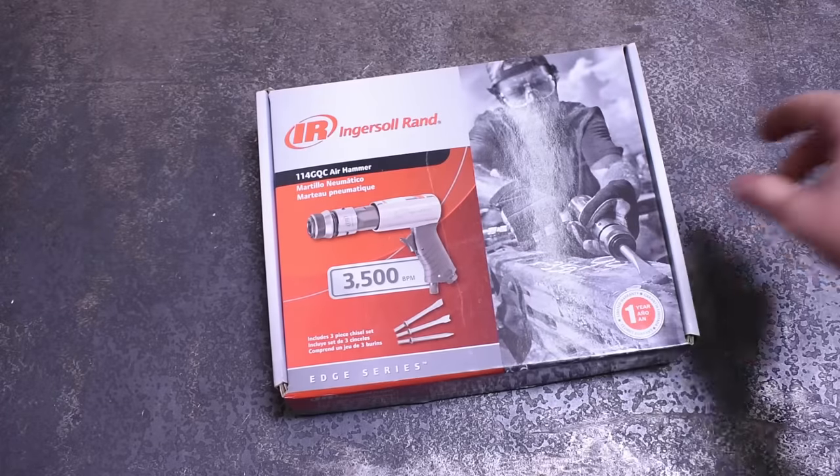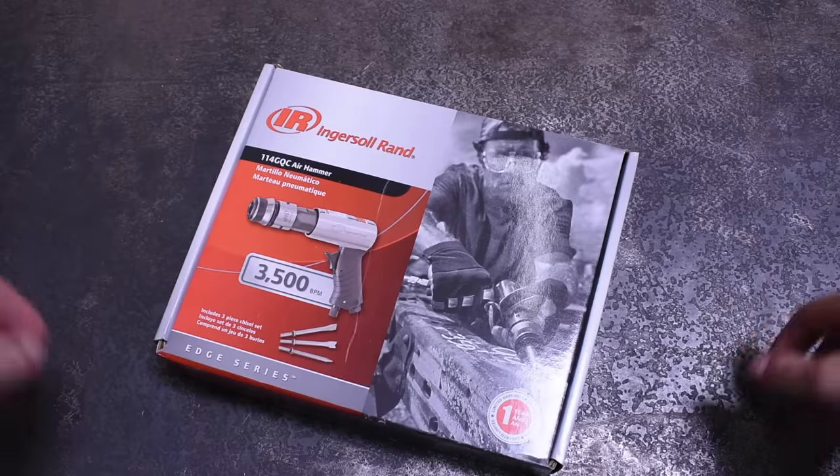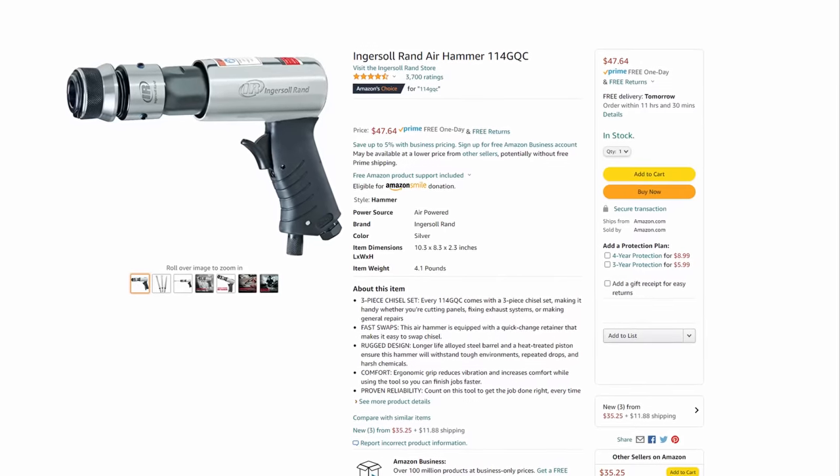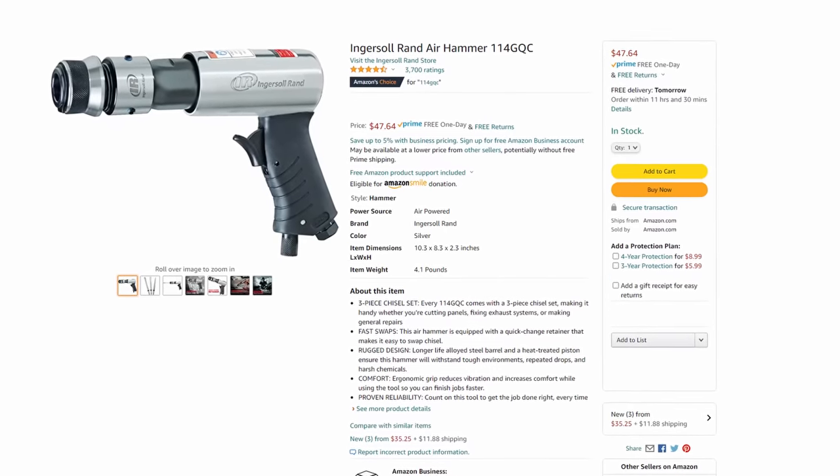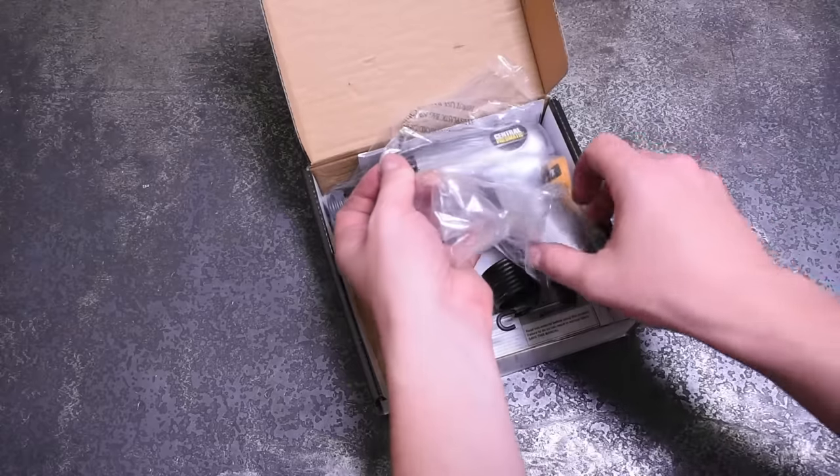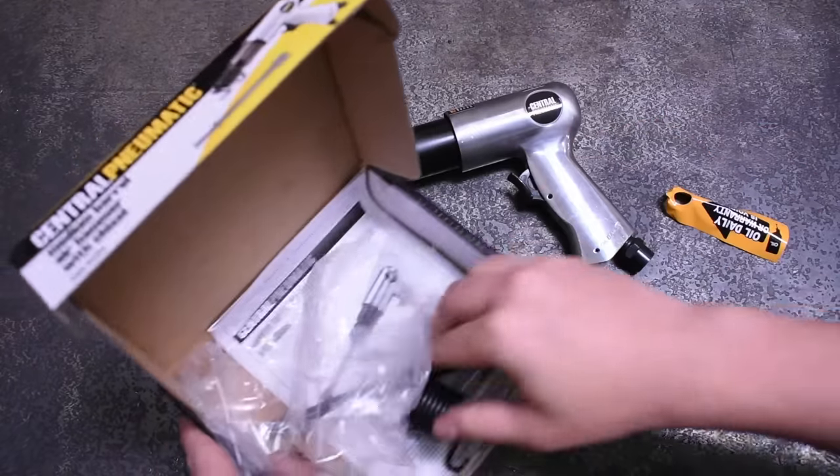On our last episode we tested a medium barrel air hammer from Ingersoll Rand, which is their budget-friendly air hammer, but at $48 is practically a Rolls Royce compared to this Central Pneumatic from Harbor Freight. Or is it? Let's find out as we strap on these low-budget ball joint budgers onto the world's first air hammer power dyno.